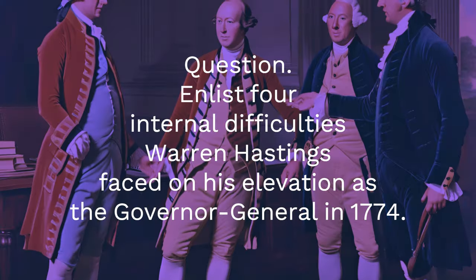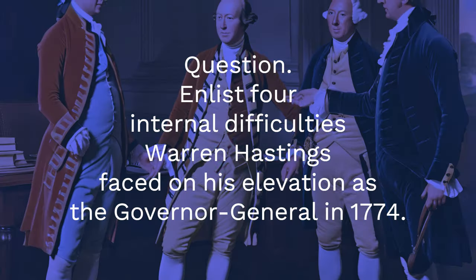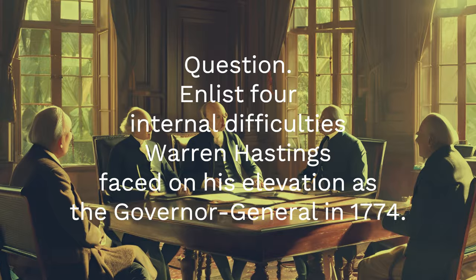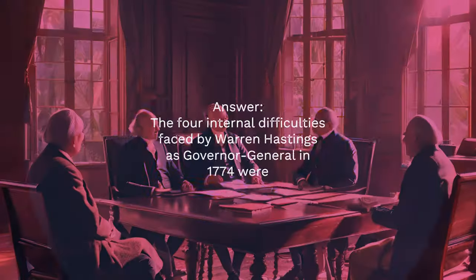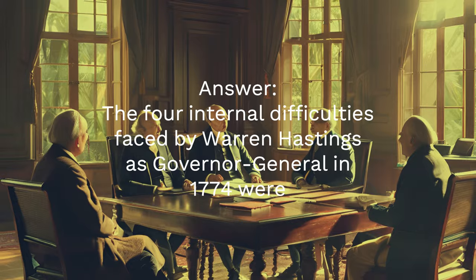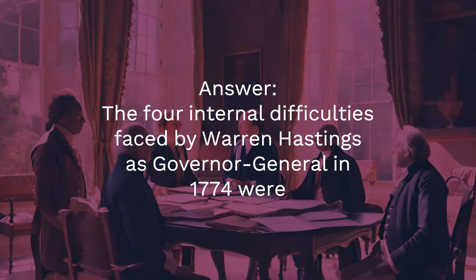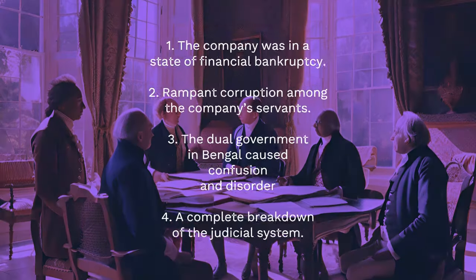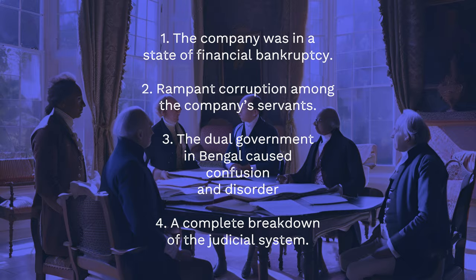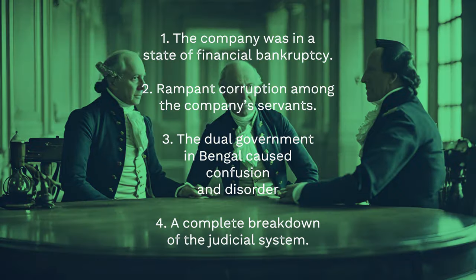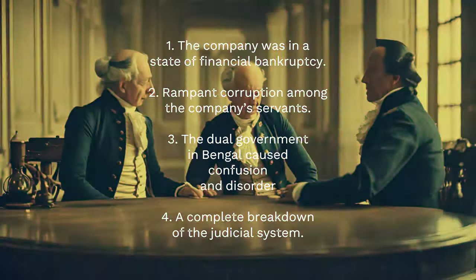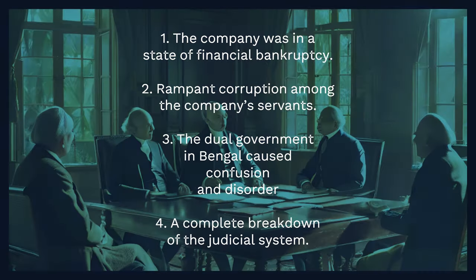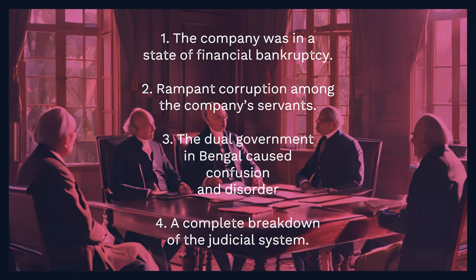Question 1: Enlist four internal difficulties Warren Hastings faced on his elevation as the Governor General in 1774. Answer: The four internal difficulties faced by Warren Hastings as Governor General in 1774 were: one, the company was in a state of financial bankruptcy; two, rampant corruption among the company's servants; three, the dual government in Bengal caused confusion and disorder.